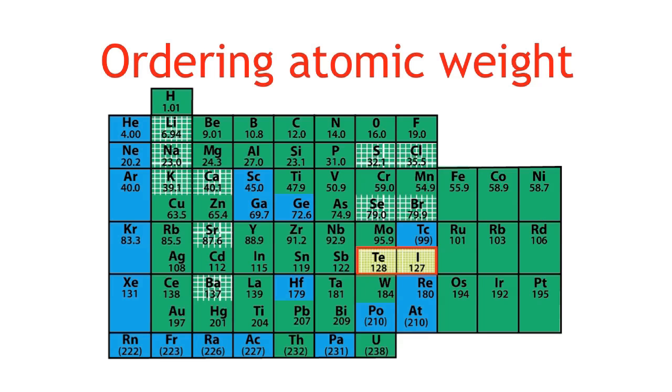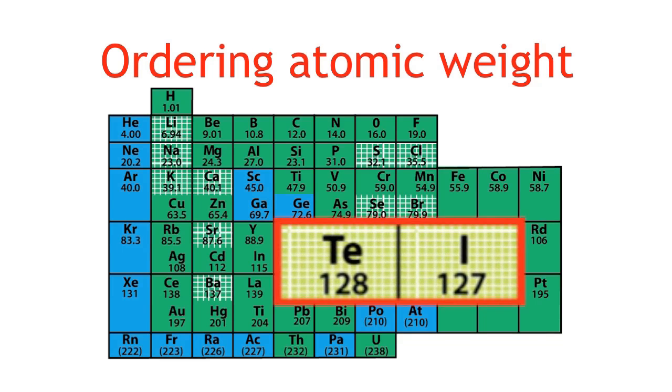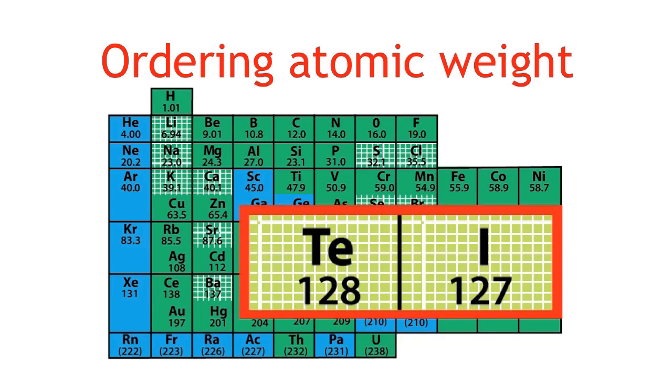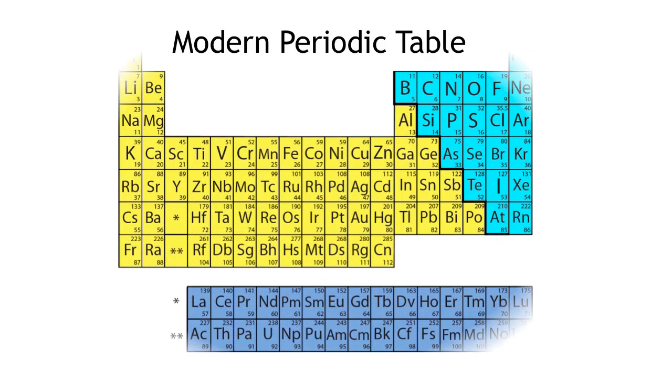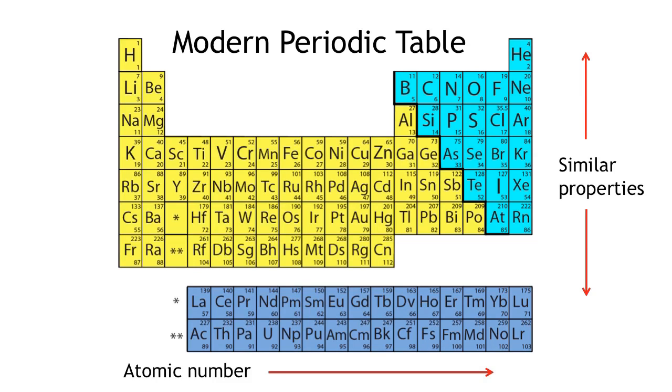Other problems with ordering by atomic weight also caused issues. These problems have been solved in the modern version of the periodic table we use today, giving us an excellent resource to understand the elements and all that we and our surroundings are made of.